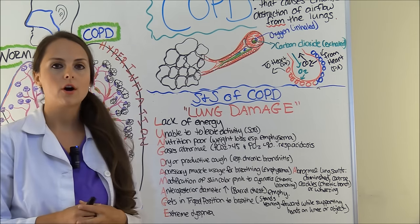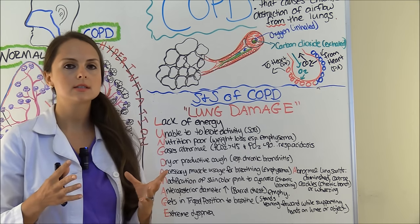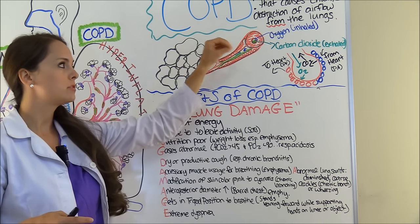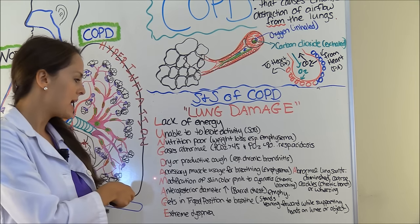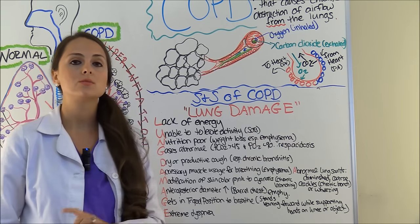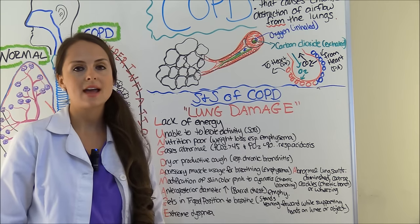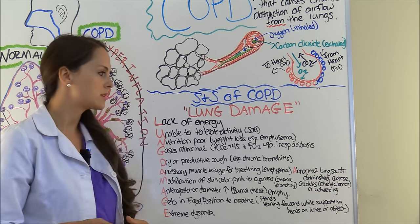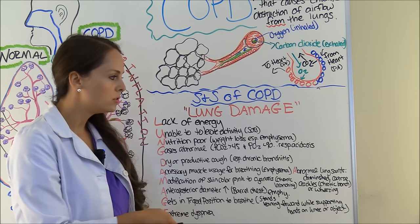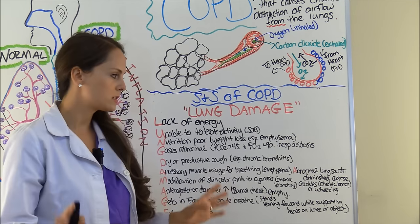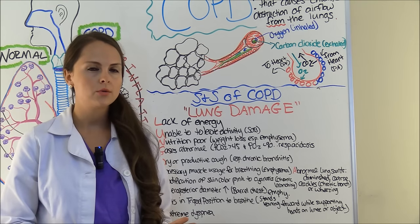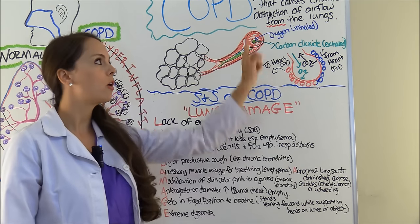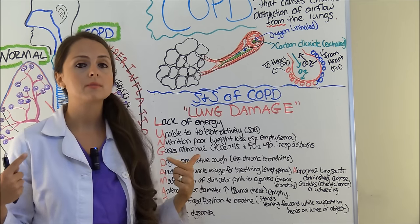D is for dry or productive cough — constant and chronic. Patients with chronic bronchitis tend to have the productive cough because of increased mucus production from those inflamed and narrowed bronchioles. A is for accessory muscle usage for breathing, mainly in emphysema patients because the diaphragm has flattened and the lungs are hyperinflated. The second A is for abnormal lung sounds, which can vary: diminished breath sounds especially in the lower bases, coarse crackles particularly in chronic bronchitis from that mucus, or wheezing.